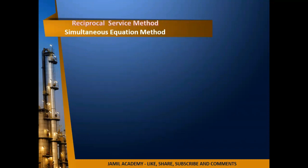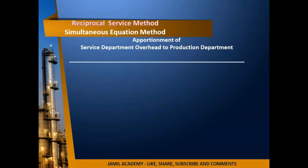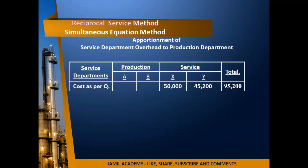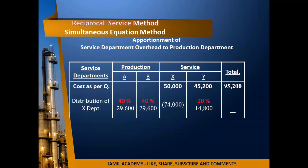So far we have used simultaneous equations to calculate the revised total overheads of both departments. Now we move to the secondary distribution — how these overheads are apportioned. The service department costs as per the question are X = 50,000 and Y = 45,200, giving a total of 95,200. Now applying the given percentages for distribution.